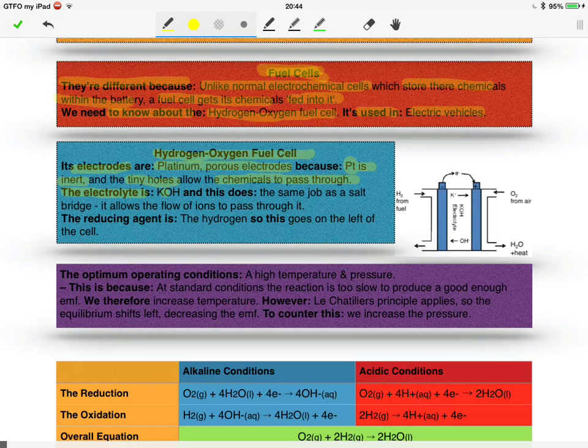The electrolyte is potassium hydroxide, and what this does is the same job as a salt bridge. It basically allows the flow of ions to pass through it, thus completing the circuit. The reducing agent is the hydrogen, and the reducing agent goes on the left of the cell.